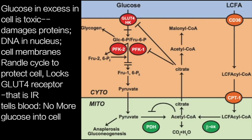Glucose inside our cells at a concentration above what our cells are designed to run on is toxic. It causes damage to protein structures — which is what a cell fundamentally is — it causes damage to DNA in the nucleus, and it destroys cell membranes. The disease diabetes is essentially elevated blood sugar. The blood sugar elevates precisely because the Randall cycle protects the more important parts of the body — the cells — from that damage. It does this by locking the GLUT4 door. That is what insulin resistance is: your cell telling the external blood environment, 'We do not require any more sugar — in fact, more sugar right now would start destroying this cell.'